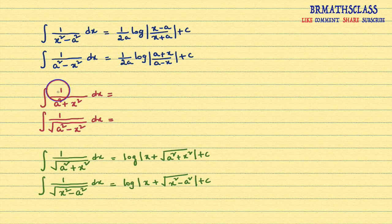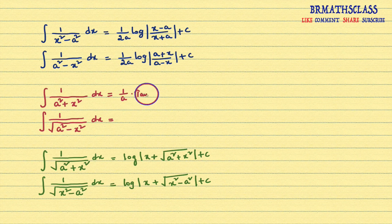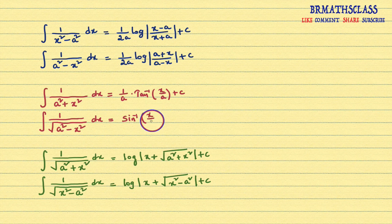Now we will see these two. Integral of 1 divided by a squared plus x squared dx — in the denominator, square root is not there and plus symbol is there. The formula is 1 by a into tan inverse of x by a plus c. That is a frequently used formula. You see this one: integral of 1 divided by square root of a squared minus x squared dx — in the denominator, square root is there and the expression is a squared minus x squared. Its answer is sine inverse of x by a plus c.